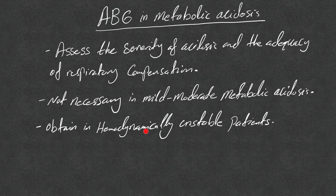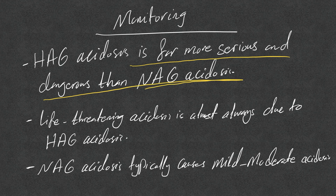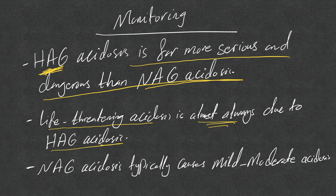I mainly obtain ABG in hemodynamically unstable or critically ill patients, or if I suspect a primary respiratory acid-base disorder. Remember: high anion gap metabolic acidosis is far more serious and dangerous than normal anion gap. Life-threatening acidosis is almost always due to high anion gap acidosis. Normal anion gap acidosis typically causes mild to moderate acidosis.